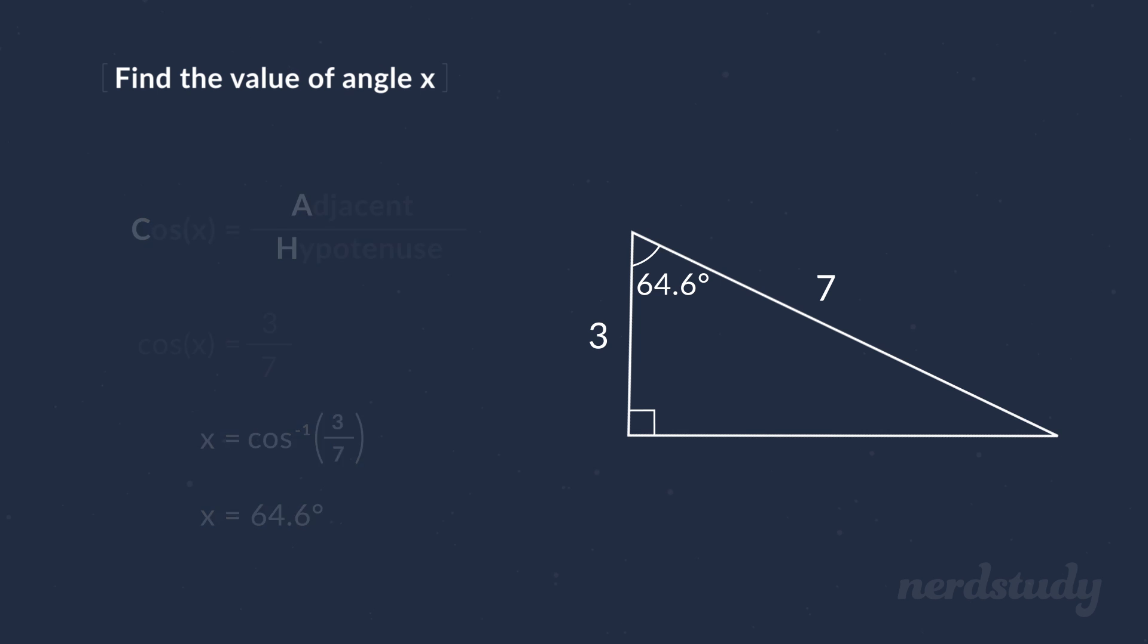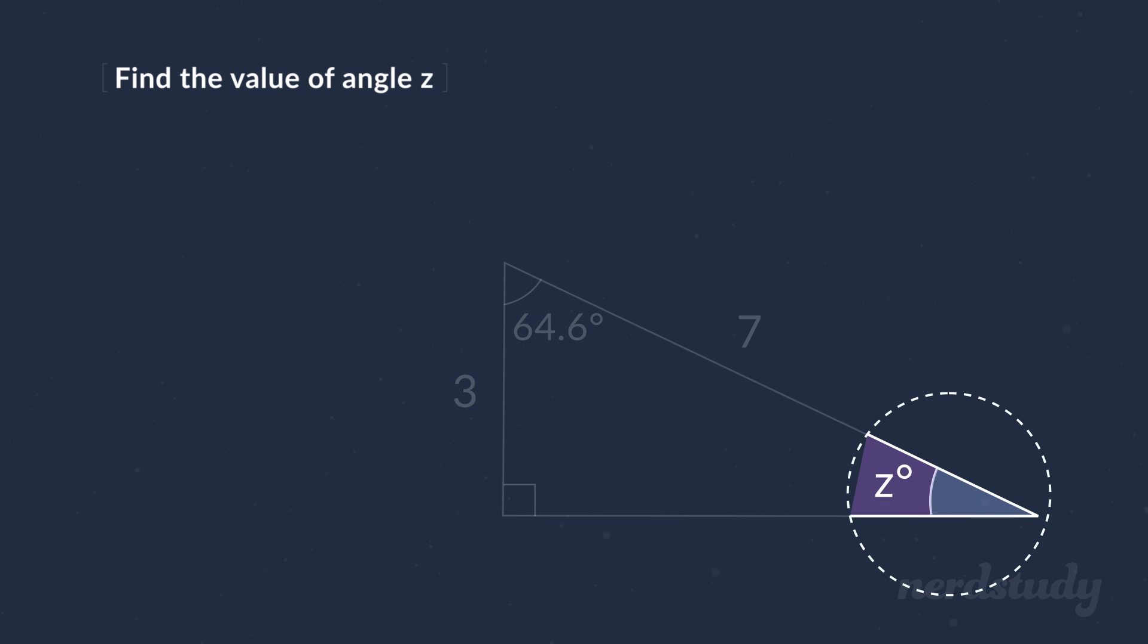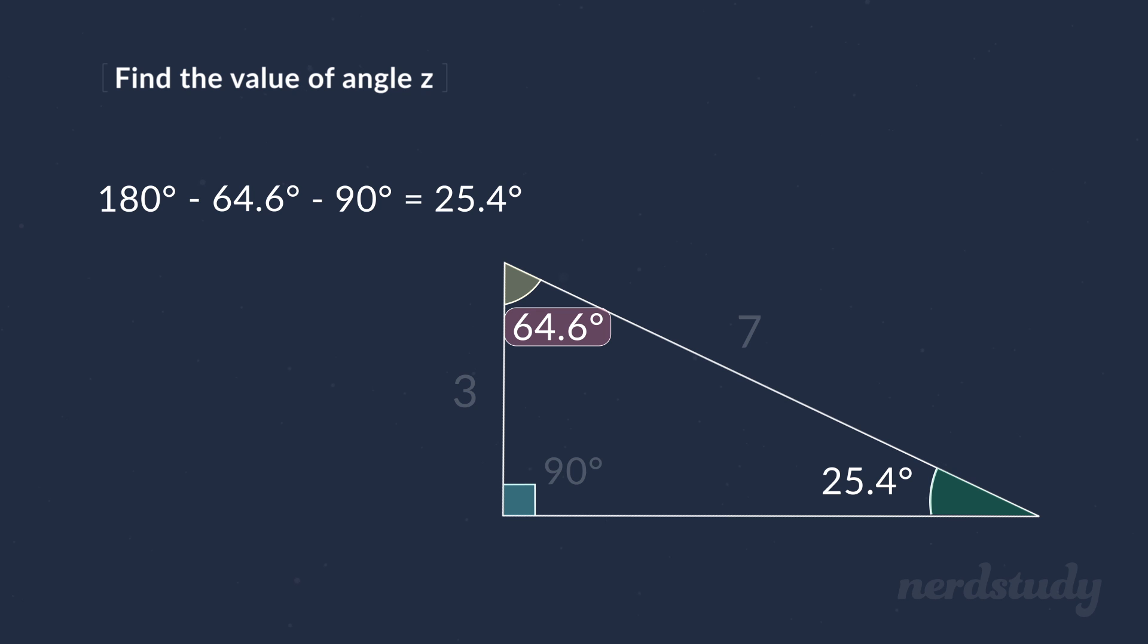Awesome. Oh, and by the way, if we wanted to find this angle here, all we would have to do is 180 minus 64.6 minus 90. Since we know that all angles in a triangle add up to 180 degrees, and we'd get our answer as 25.4 degrees for this angle. Just remember that since we rounded the 64.6 degrees, the angle here is going to be a rounded number as well. Great.